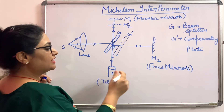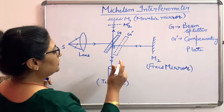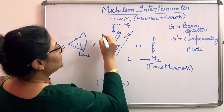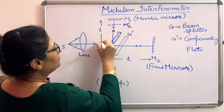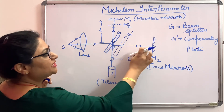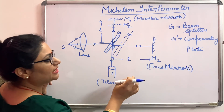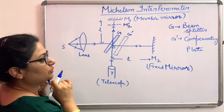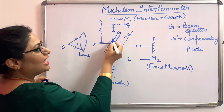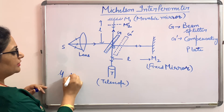To study the interference pattern, we need to find the path difference. The length of the two mirrors from the glass plate is kept fixed at L. The transmitted beam travels entirely in air — path L going towards mirror M2 and L returning from mirror M2. The ray reflected from the glass plate travels through the glass plate, which has refractive index mu and thickness T.